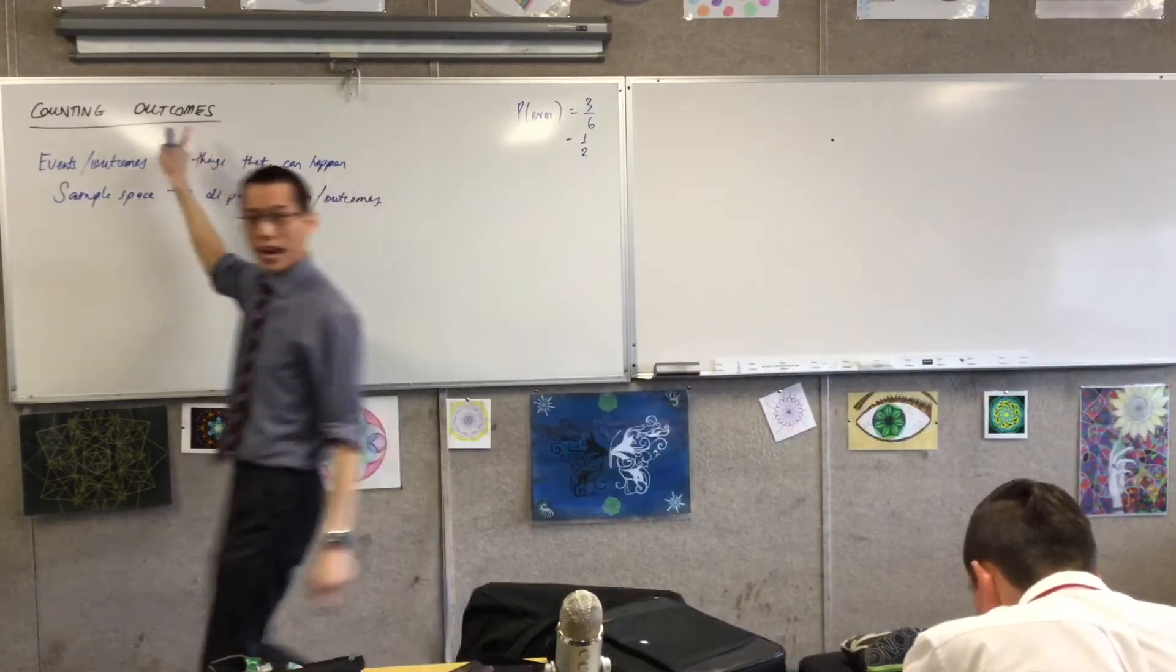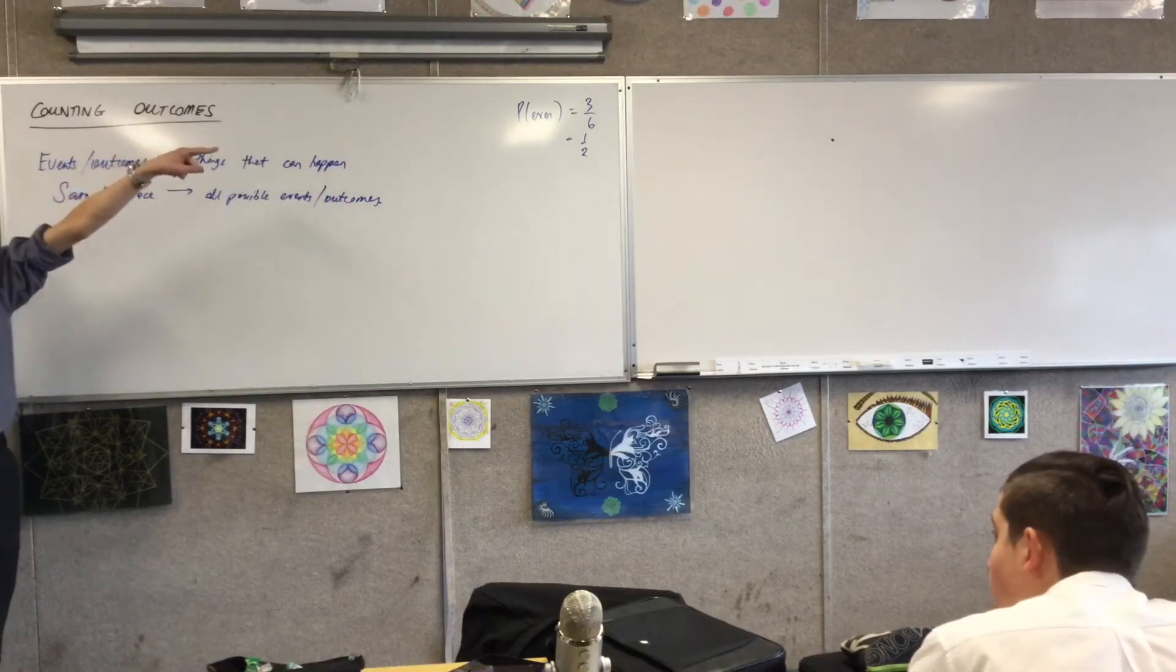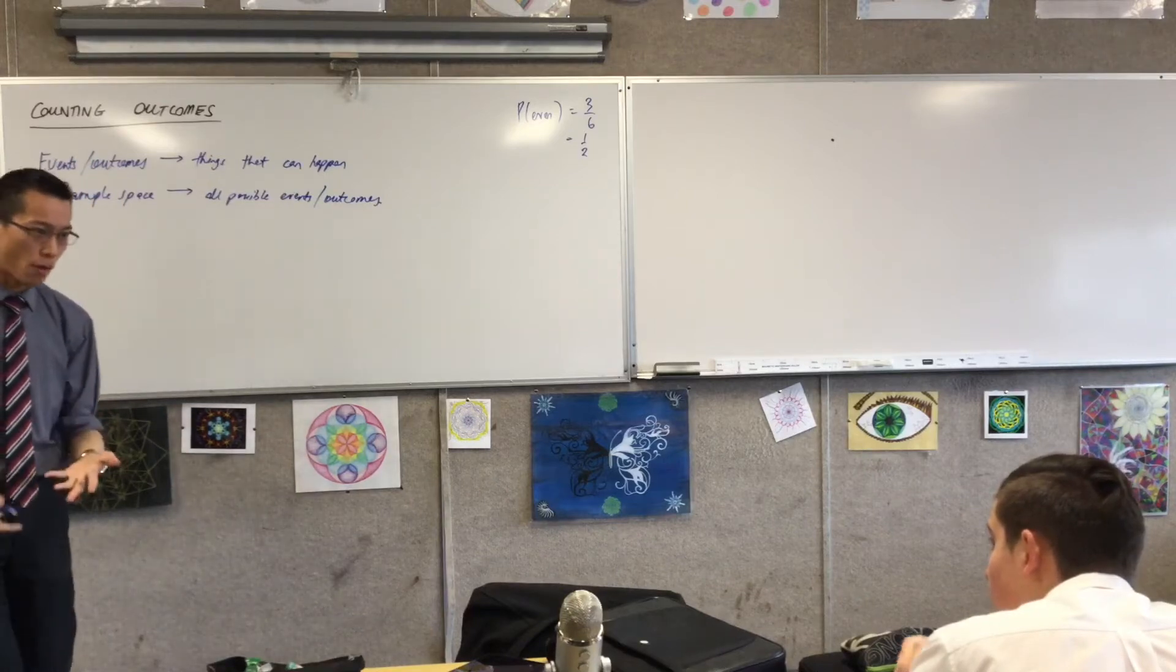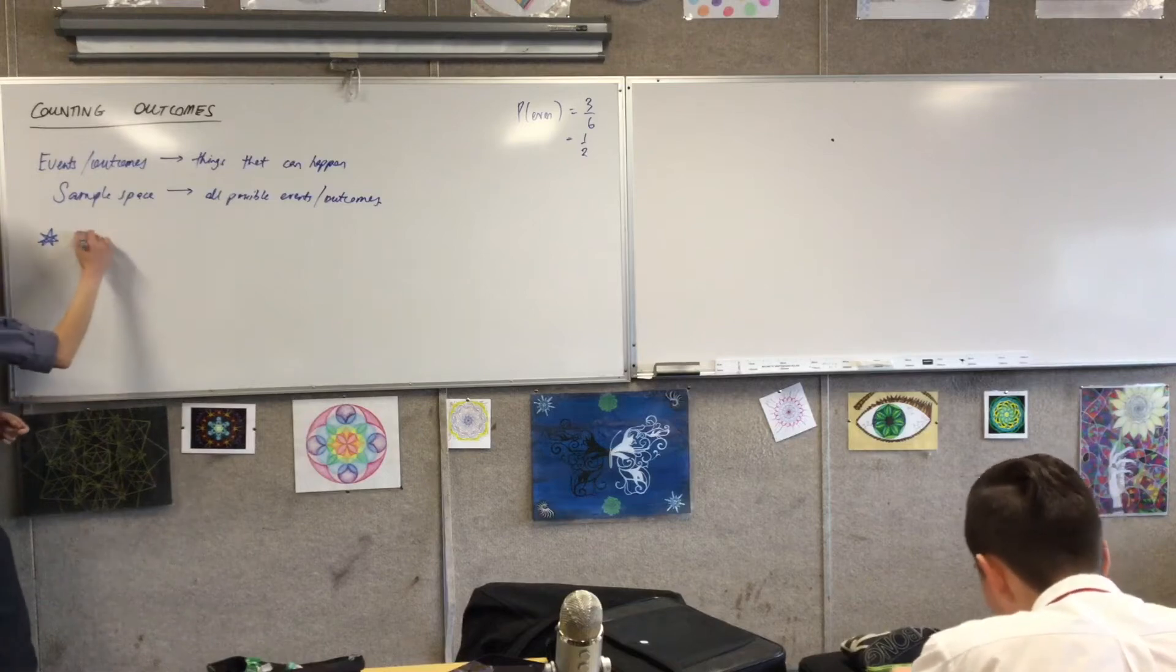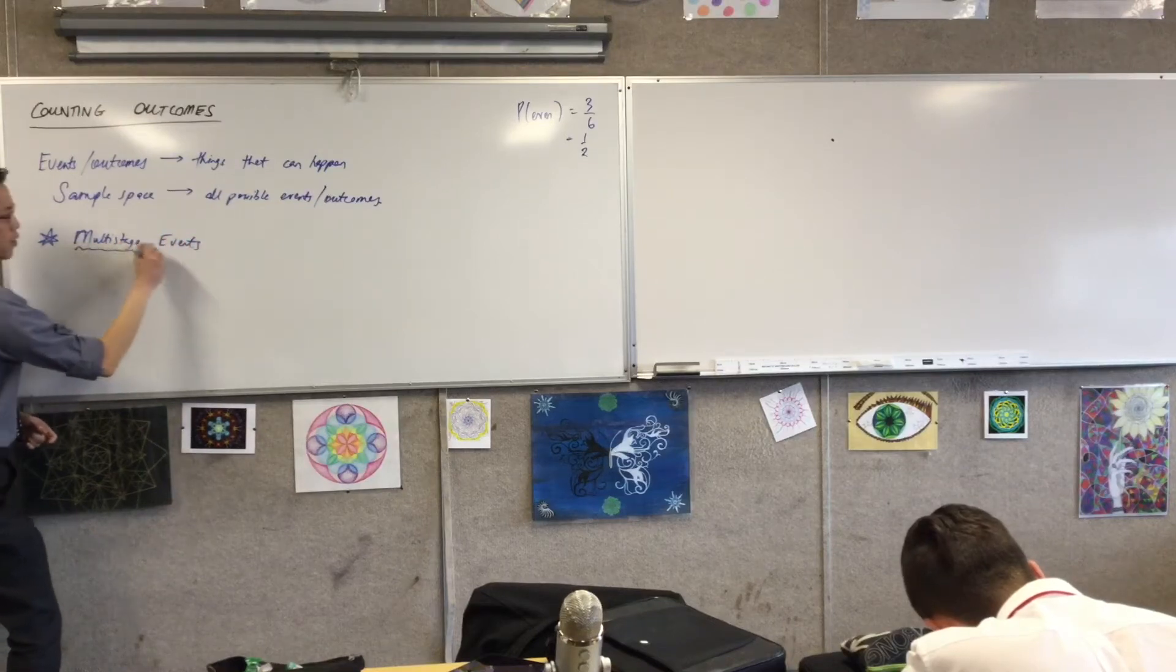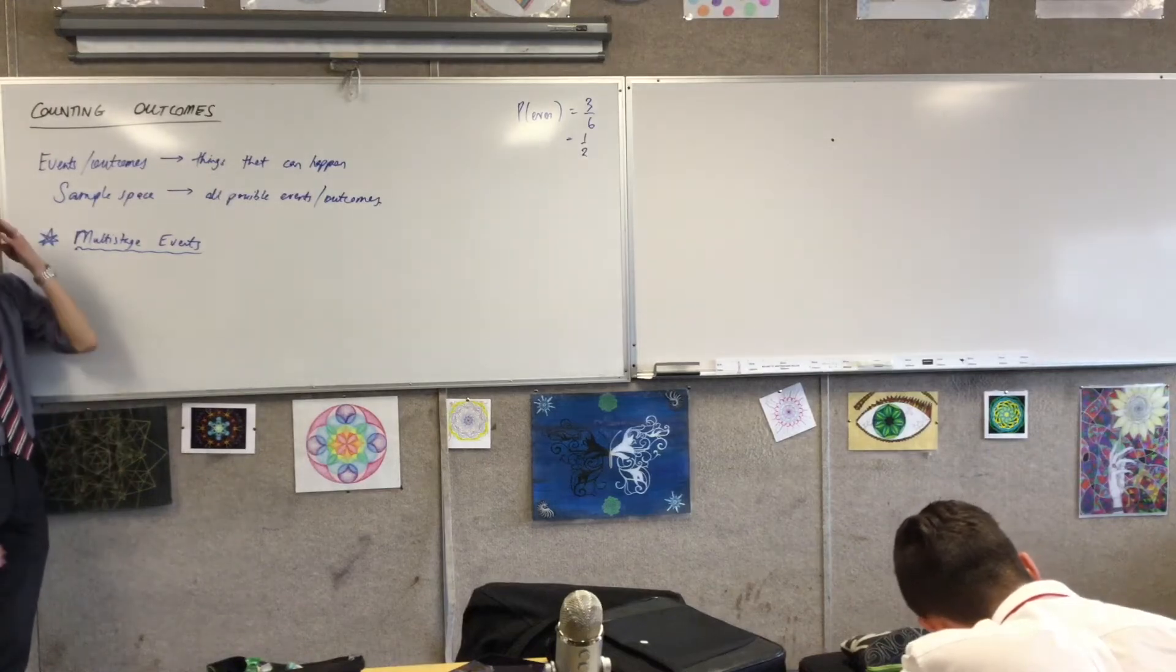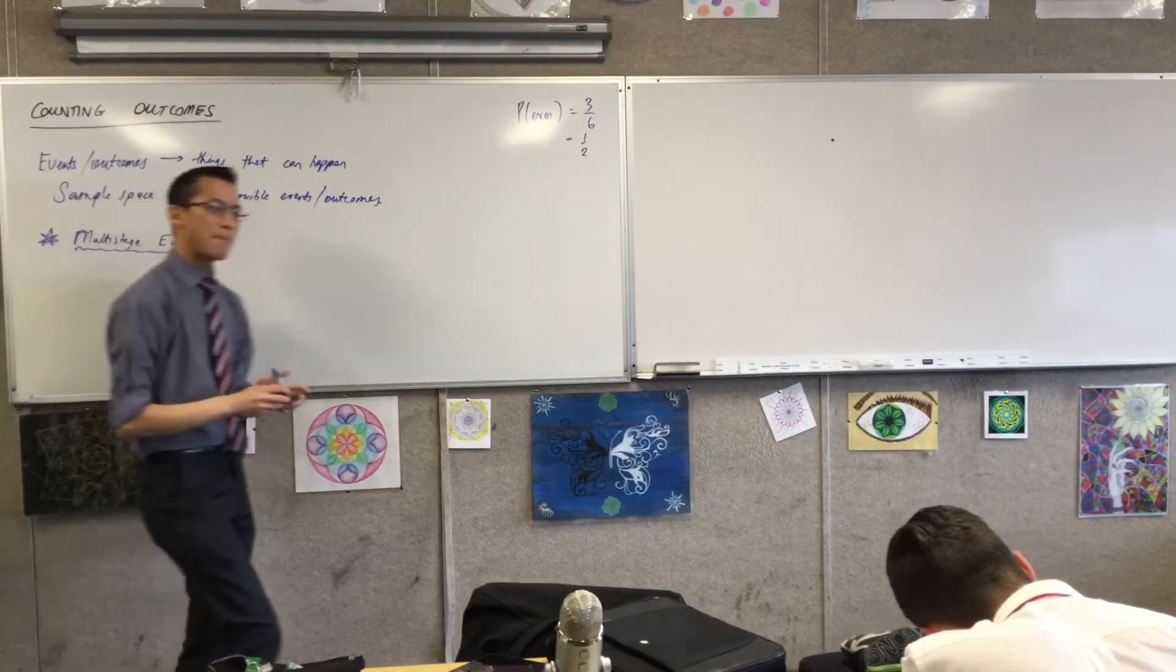Okay, now... This idea of counting outcomes is that we can list these out. Like with a die it's pretty easy. One, two, three, four, five, six, you can have them on your head. But if you have something a little more complicated, okay, so make a little sub heading for me right, for multi-stage events.